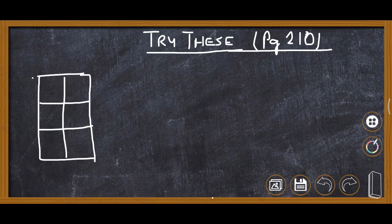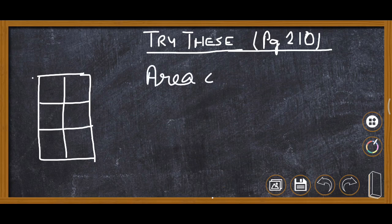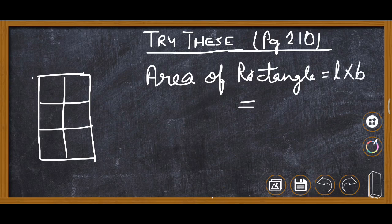There are five figures given and we need to find the area of each polygon — that is, the area of each part the rectangle is divided into. First, we calculate the area of the rectangle: Area = length × breadth = 6 × 4 = 24 centimeter square. This area of 24 cm² remains the same for all figures.